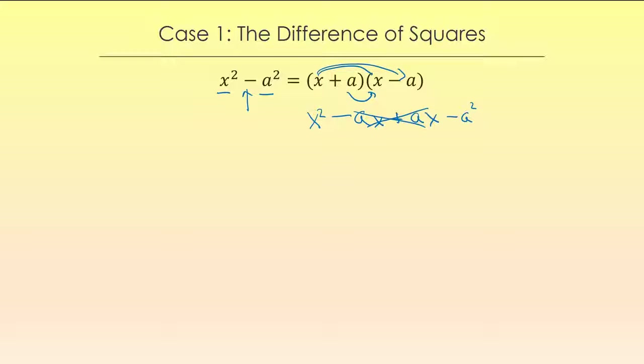So when you see a problem that looks like the difference of squares, all you need to do is figure out what x is, what is the thing that got squared, and what a is, what's the thing that got squared. And then you just plug them into the formula x plus a times x minus a. So fun.